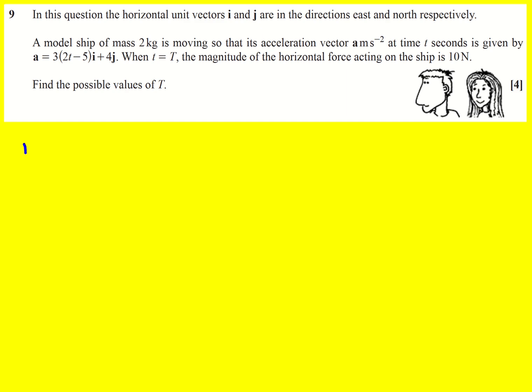Now we're told that the mass is 2, so I'm just going to write that down, 2 kilograms, and the acceleration is a vector a. And at time t seconds this is given by this which I'm going to write as a column vector expanding it out. So it's going to be 6t minus 15 and then 4 down here.